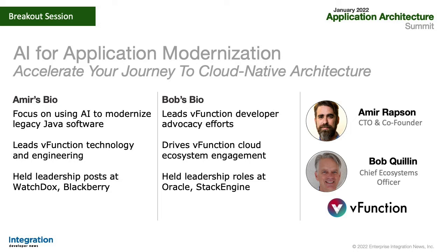We're really glad to have both Amir and Bob with us. Amir Rapson's expertise is to combine Java with modern techniques to embrace microservices, Kubernetes, and containers for migration and modernization without any errors or hiccups. Bob Quillen focuses on developer advocacy, marketing, and cloud ecosystem engagement to help enterprises accelerate their journey to the cloud. He was a former VP of Oracle Cloud Developer Relations, so he knows a lot about Java and the cloud.